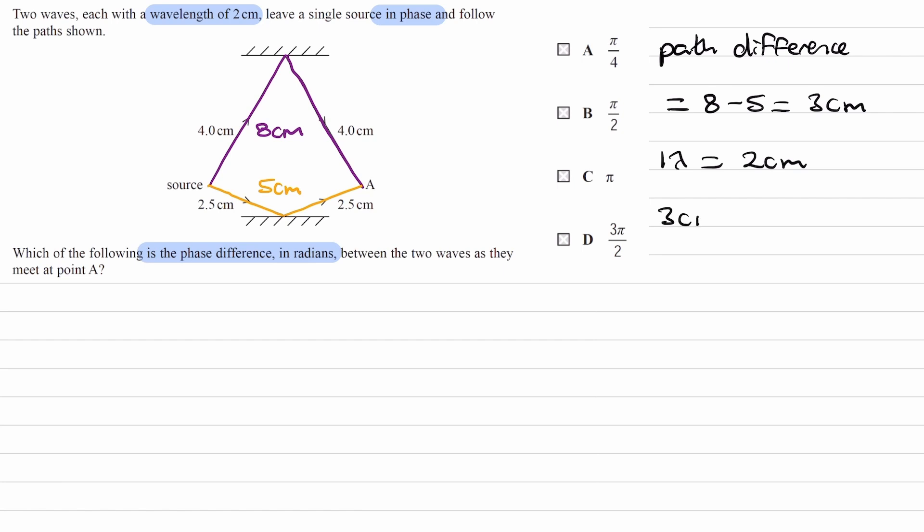So we know that 1 wavelength is equal to 2 cm. So if we were to do the path difference divided by 1 wavelength, that would give us 1.5 wavelengths. Or in other words, the 3 cm of path difference is equal to 1.5 wavelengths.